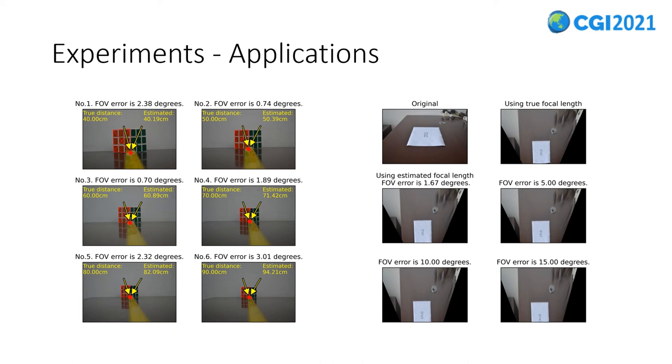The second is perspective transformation. With the focal length of a camera, we can also transform the perspective of an image taken by the camera. It is useful for obtaining the bird's eye view of a road. The bird's eye view obtained using our estimated focal length is very close to that of using the true focal length.